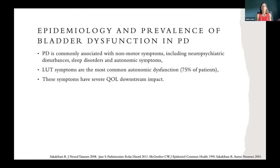In Parkinson's disease, it's commonly associated with non-motor symptoms including neuropsychiatric disturbances, sleep disorders, and autonomic symptoms. Lower urinary tract symptoms are the most common autonomic dysfunction seen in Parkinson's patients, occurring in 75% of patients. These symptoms can have a severe consequence on patients' quality of life, particularly if there is incontinence involved.